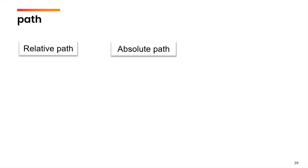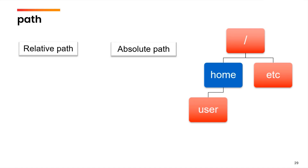In the relative method, we specify the path from the current directory onwards. But in an absolute path, we specify the path starting from the root itself. For example, let us suppose this is the directory hierarchy wherein the root directory contains two directories — home and etc. Home contains the directory user, and the current working directory is home. If you are already inside home, you need not specify the full path starting from the root.